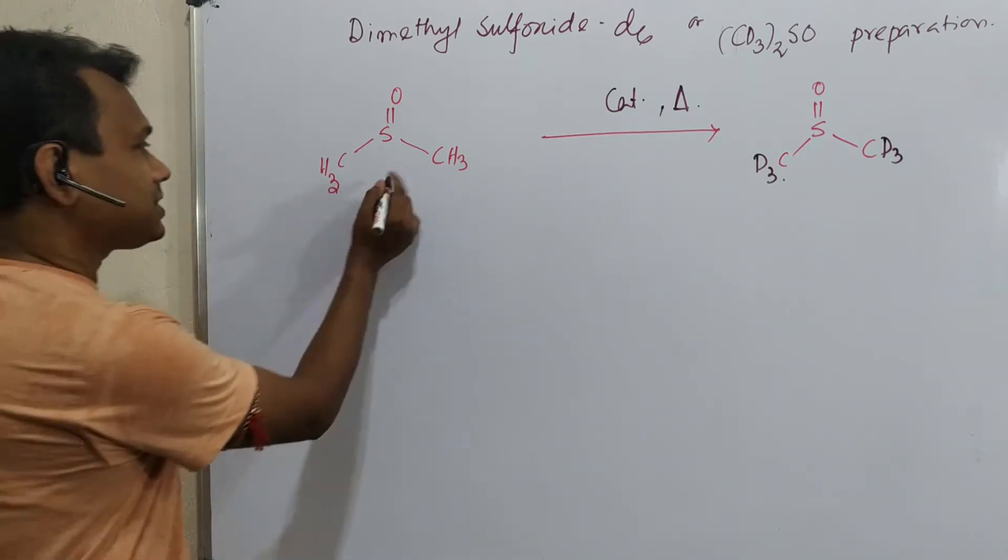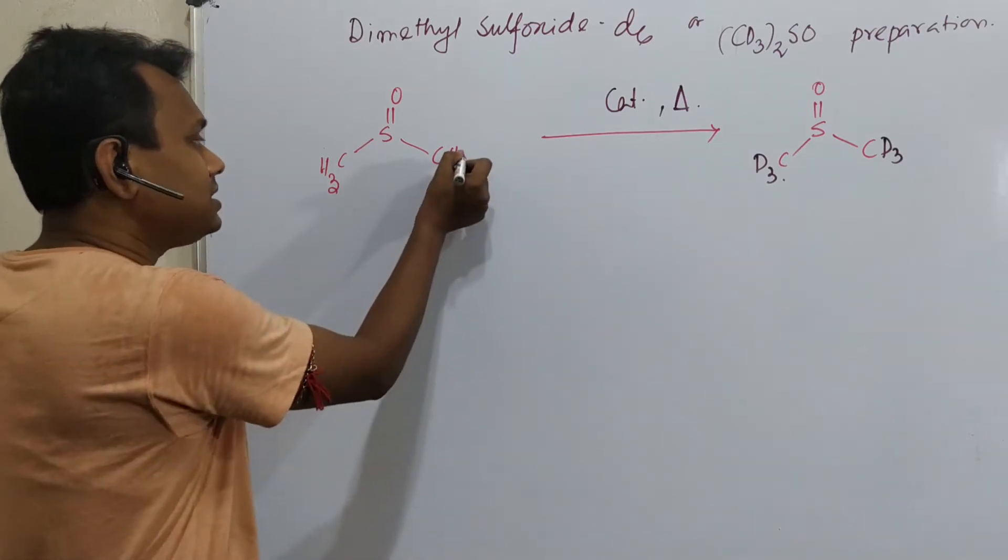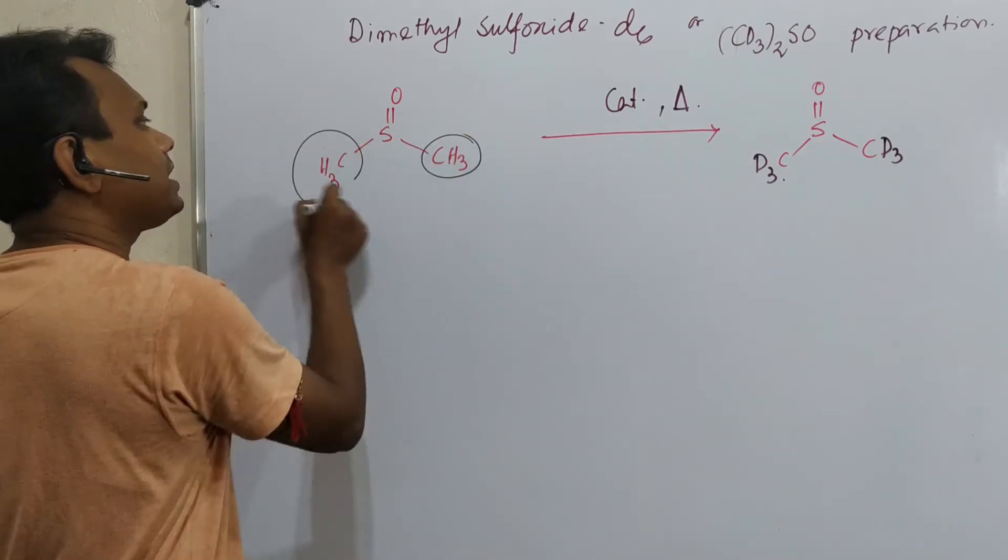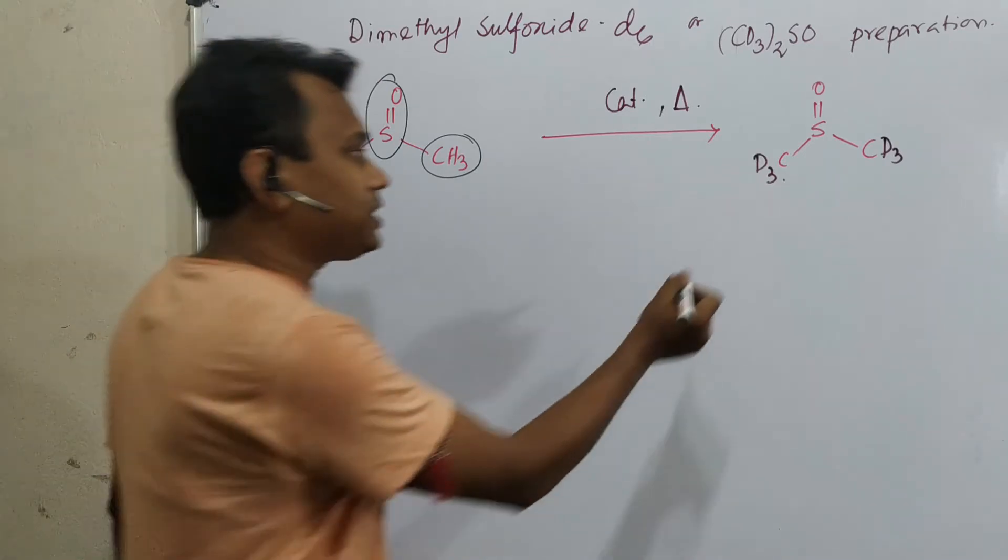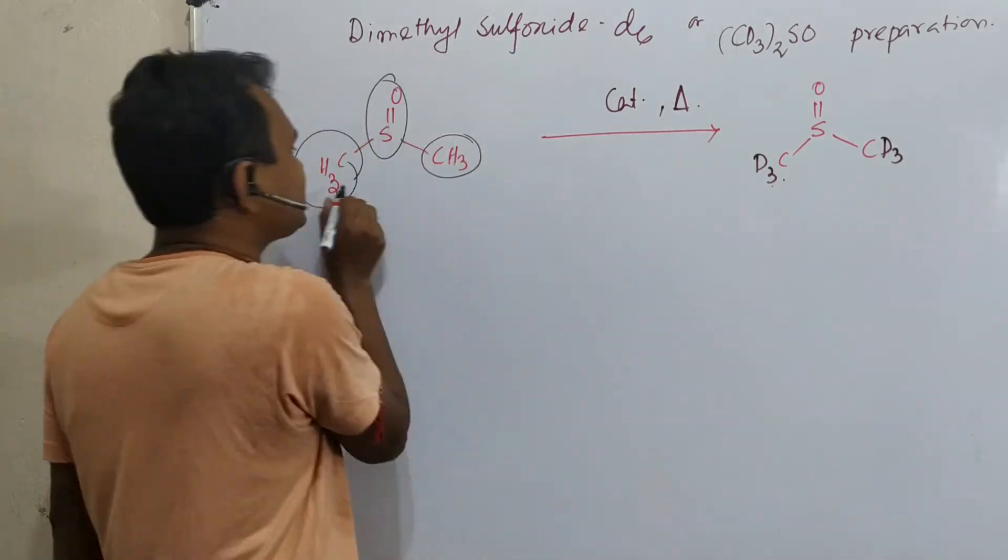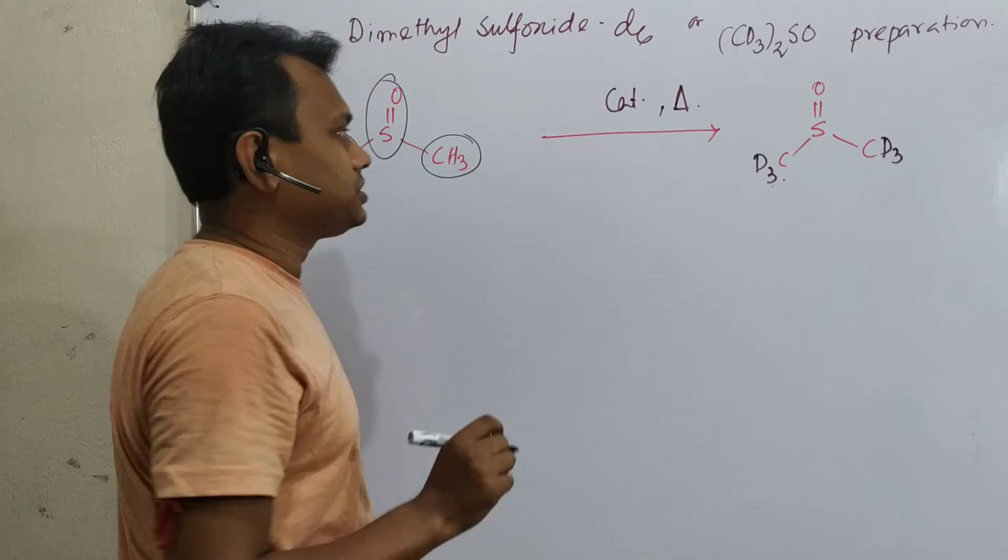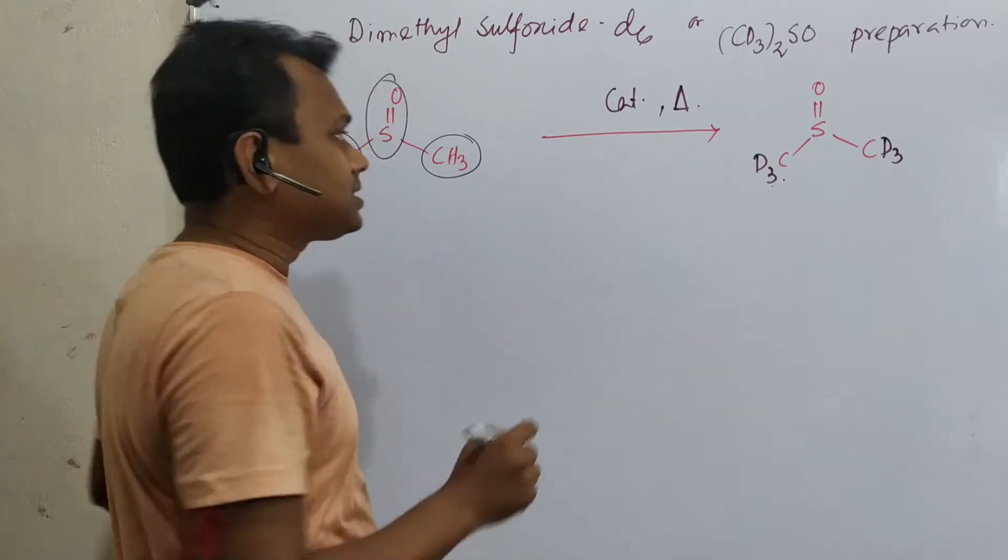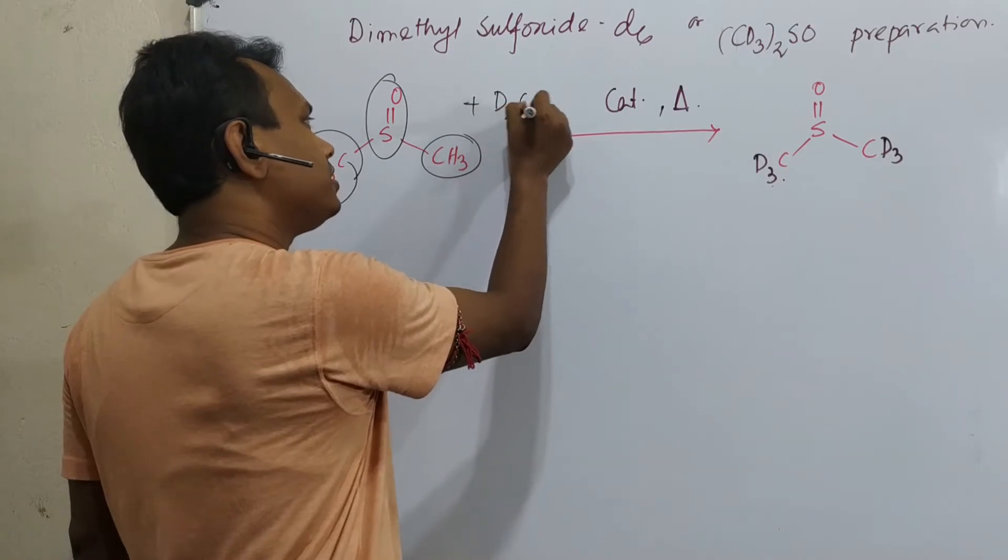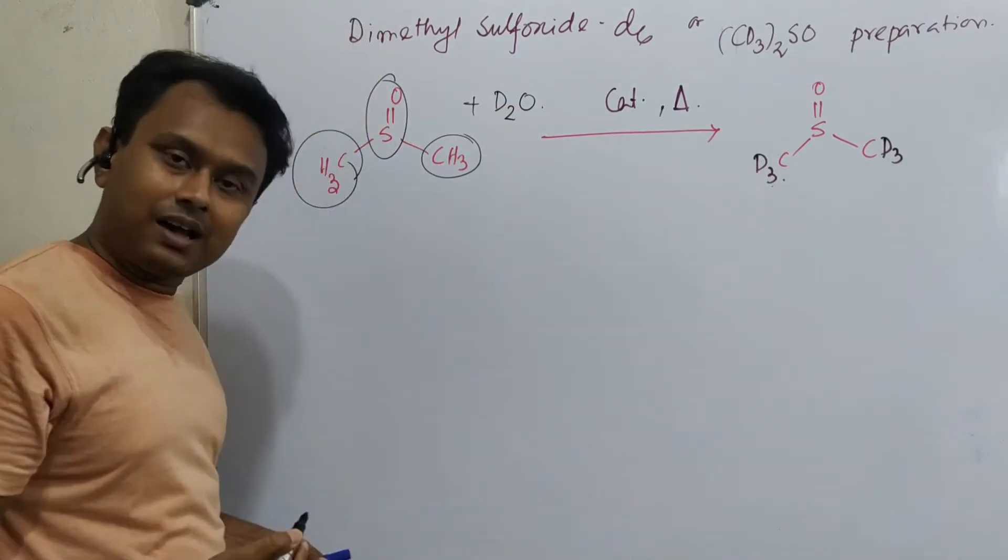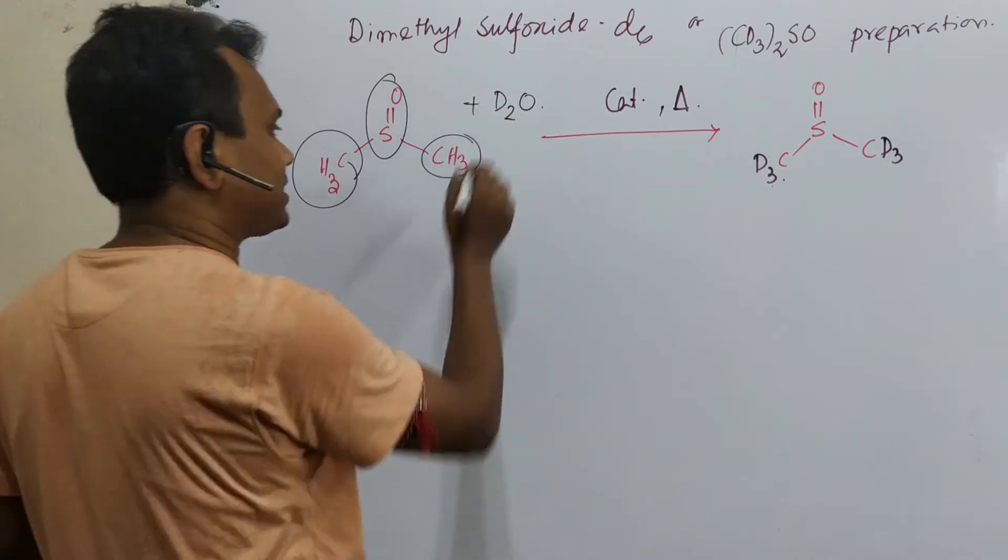DMSO means dimethyl sulfoxide looks like this. Why dimethyl? See, one methyl, two methyl, and this is sulfoxide. What we are going to prepare is this deuterium version, means all 6 protons will be replaced by deuterium. For that purpose, we need a deuterium reagent and that is nothing but D2O. Remember, D2O is the source of deuterium in our planet Earth and from sea water we can extract it.